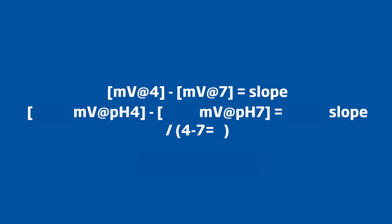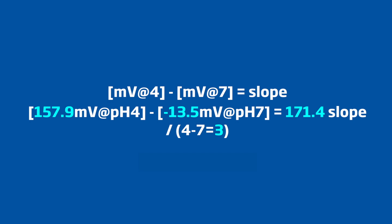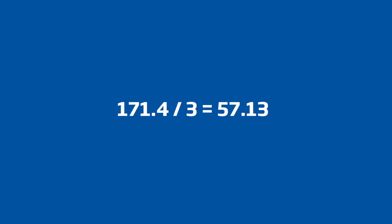Once you have millivolt readings from two different pH buffers, you can determine the slope of a pH electrode by dividing the change in millivolt over the change in pH units, which equals our slope 57.13 millivolt per pH unit change.